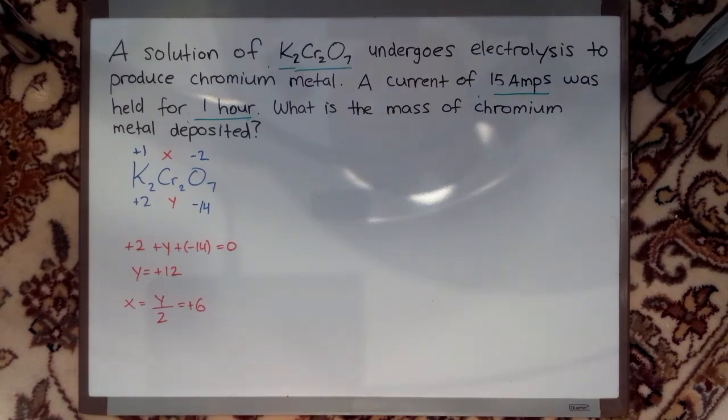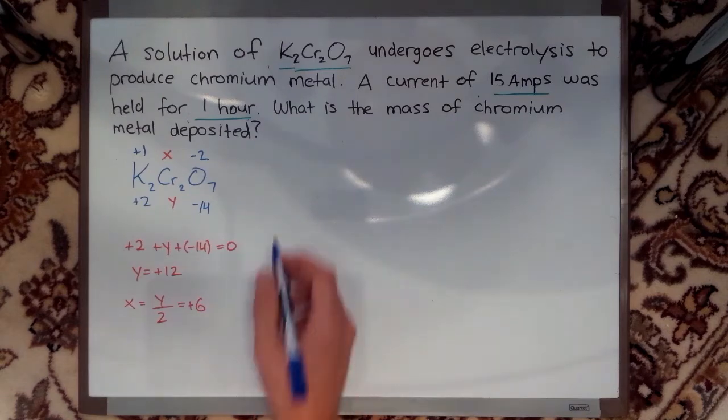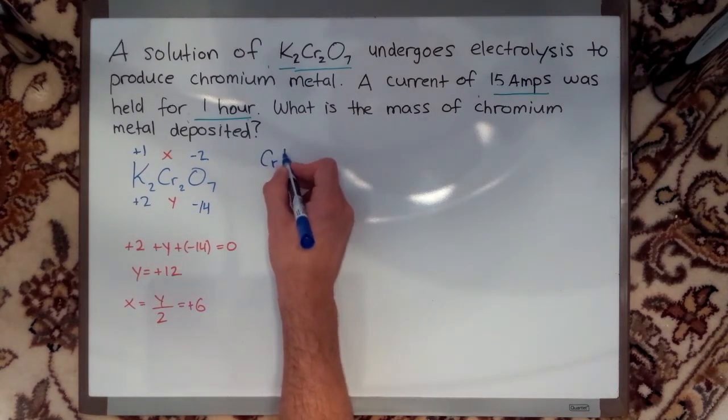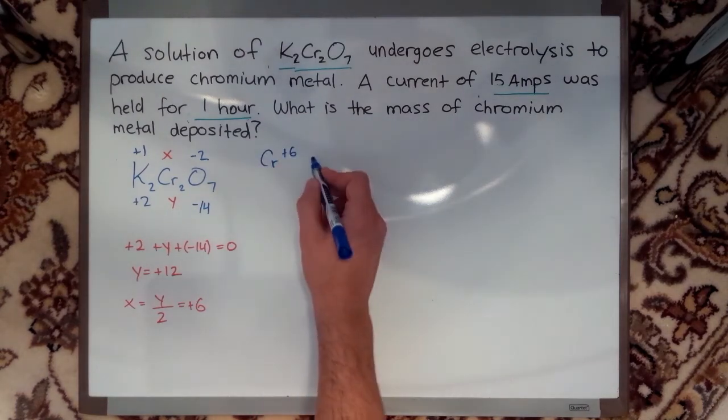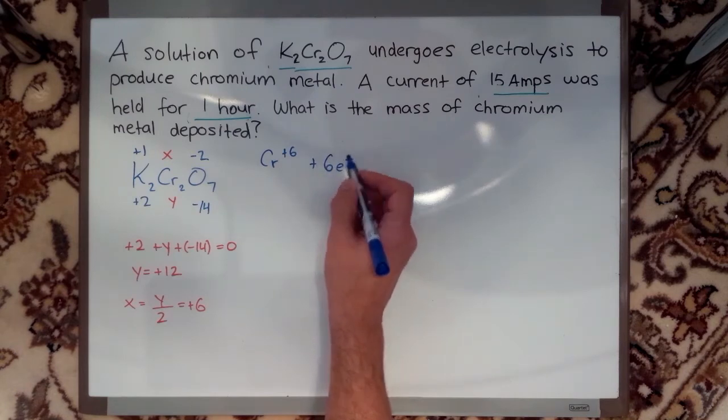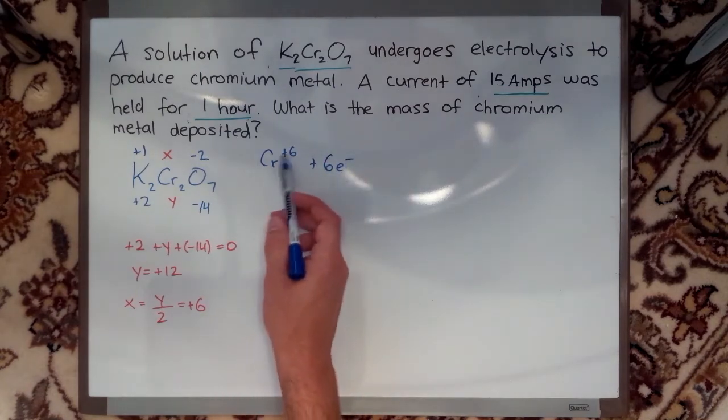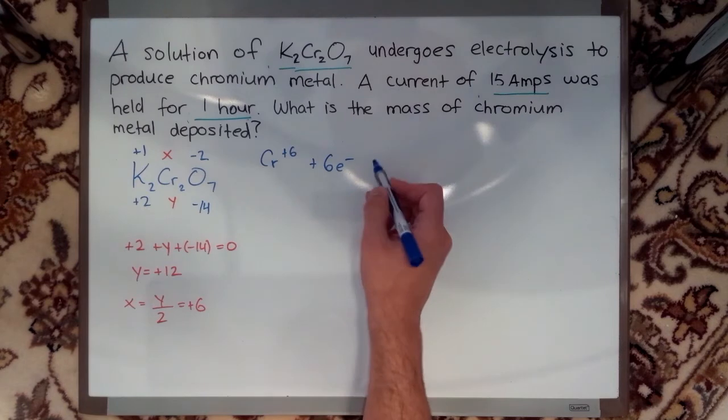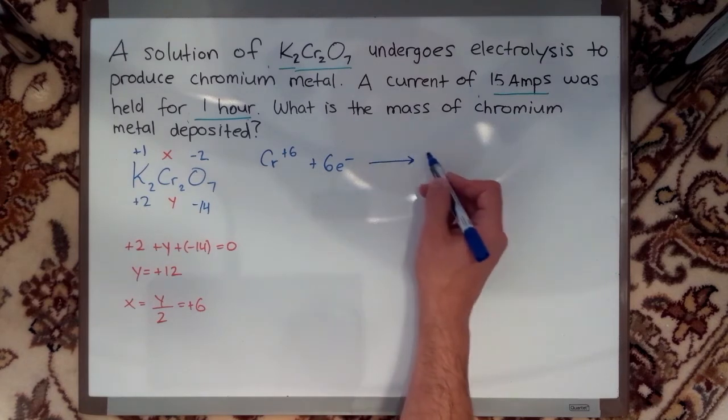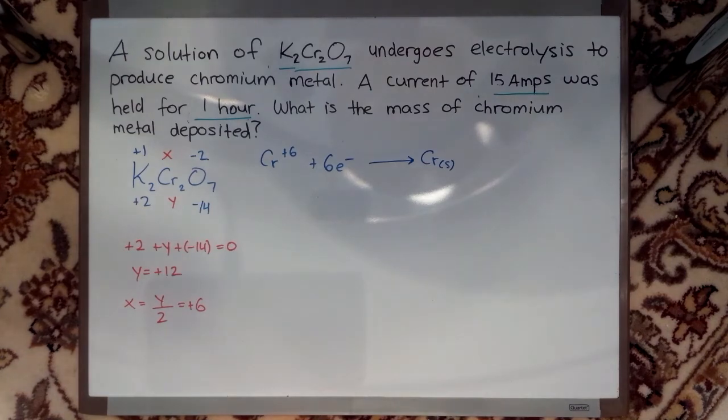Now I know what equation I have to write down, and that's going to be Cr plus six plus six electrons. Because I'm turning it into a metal, I use up all this charge, so I add six electrons and it turns into chromium solid. And you'll see why that's important in a second.